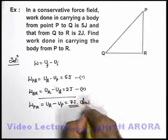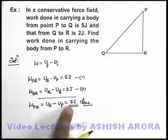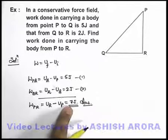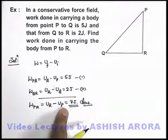So this is the answer to this question, where we can say 7 joules work is required when the body is taken directly from position P to position R.